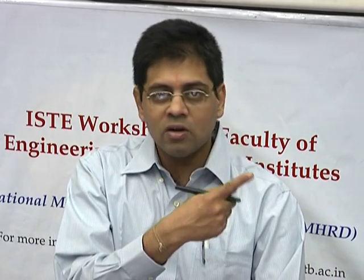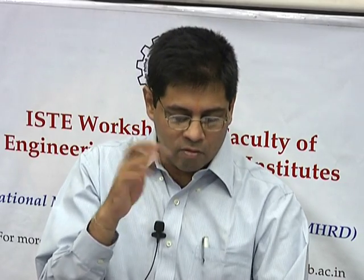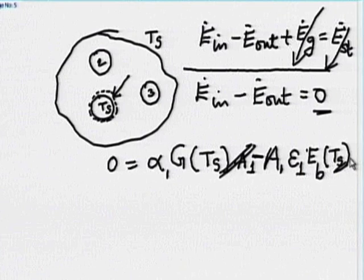In one of the tutorial problems — natural convection cooling of an aluminum slab — you have to find dT/dt for cooling, which requires going through this energy balance step. This cannot be over-emphasized; it is probably the most important equation.